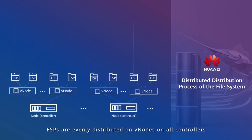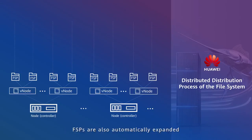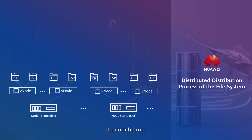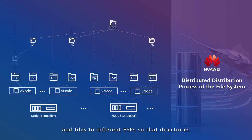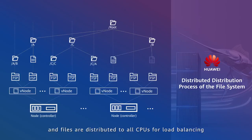FSPs are evenly distributed on Vnodes on all controllers. When more controllers are added, FSPs are automatically expanded to additional controllers to achieve global load balancing. In conclusion, the OceanStore Dorado file system distributes directories and files to different FSPs, so that directories and files are distributed to all CPUs for load balancing.